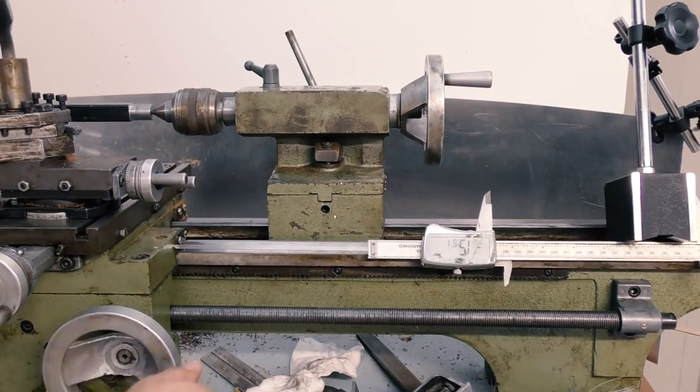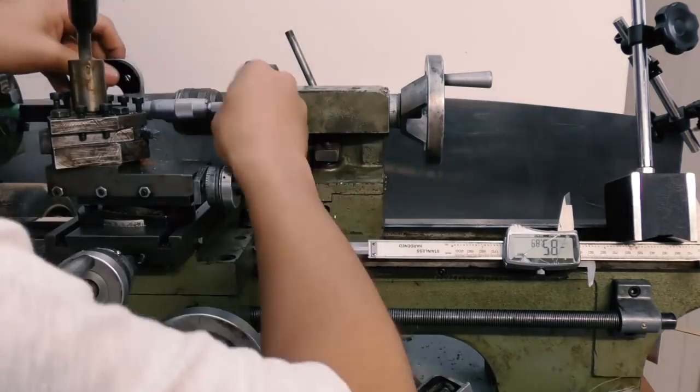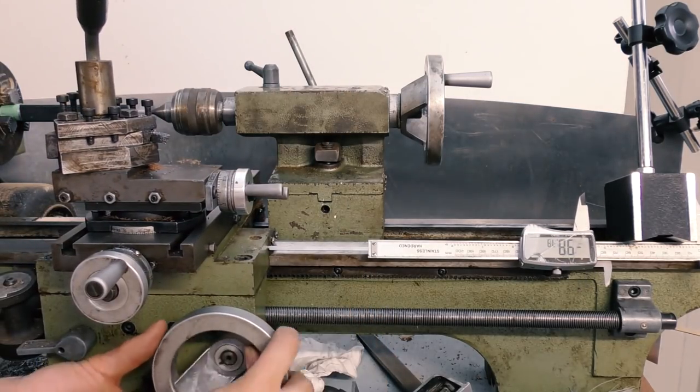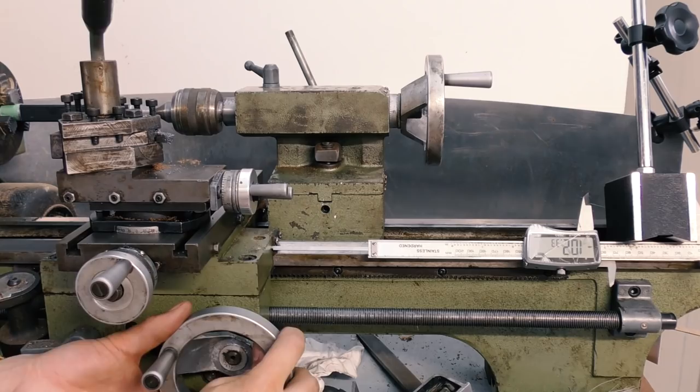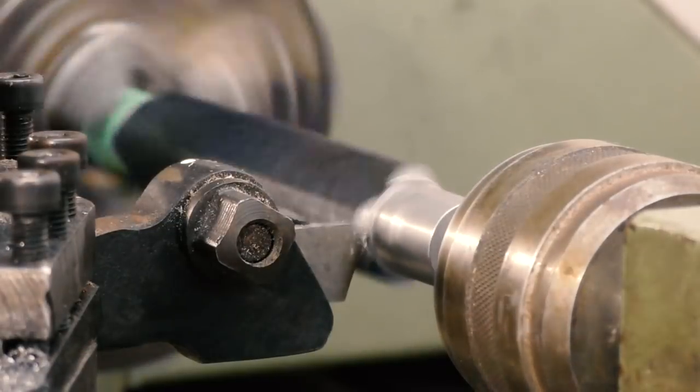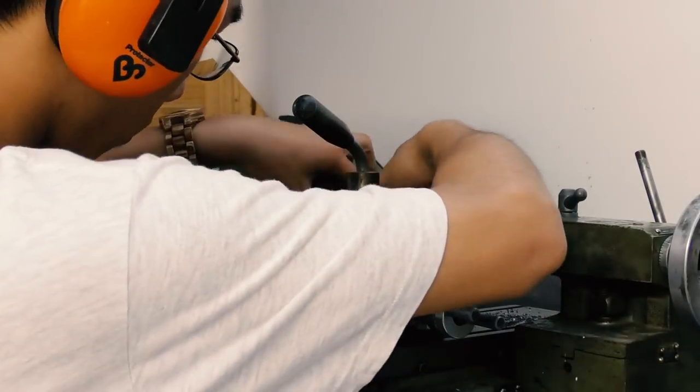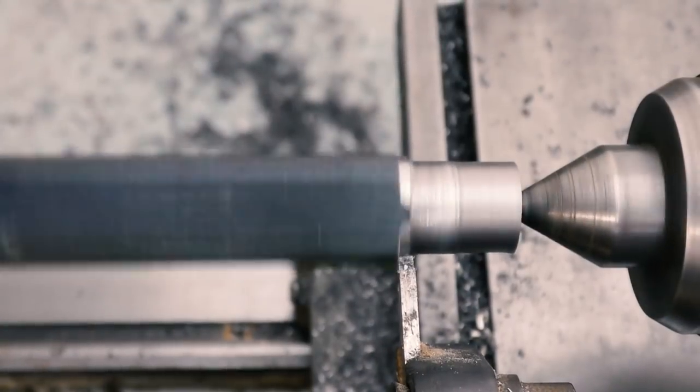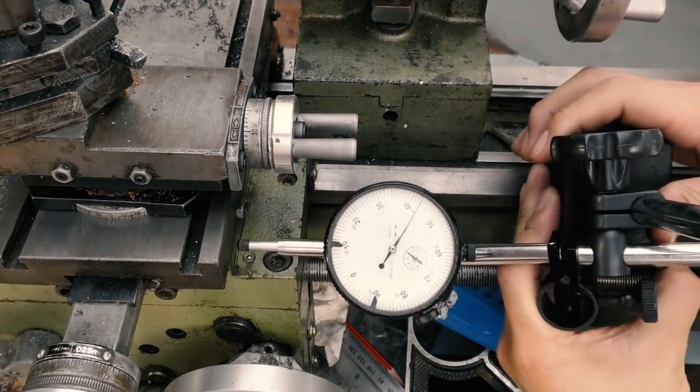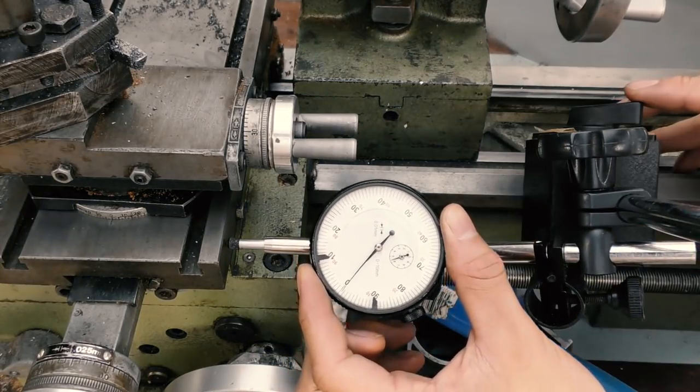To make the cut that establishes the distance between the two bearings, I am using my magnetic base and calipers to set it up. The extra 2.4mm is to account for the width of the cutter. The last one is just offset by a millimeter so I can use my dial indicator for that.